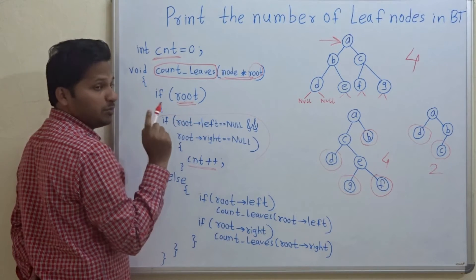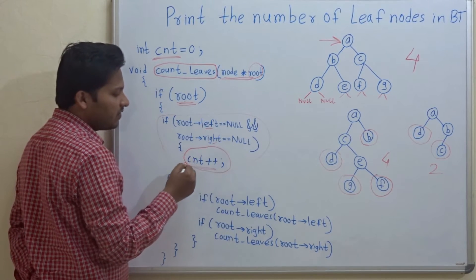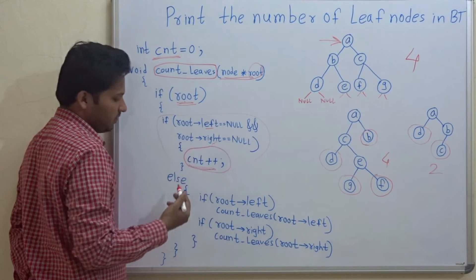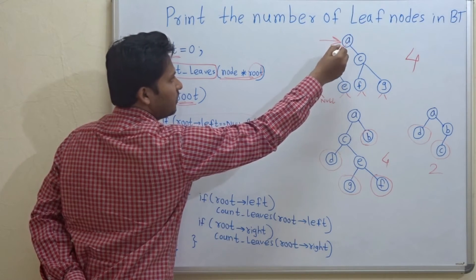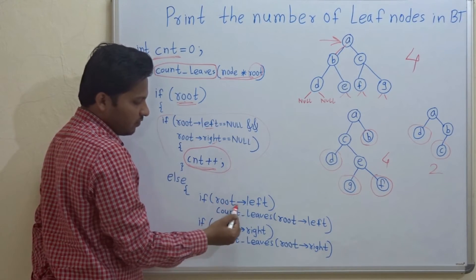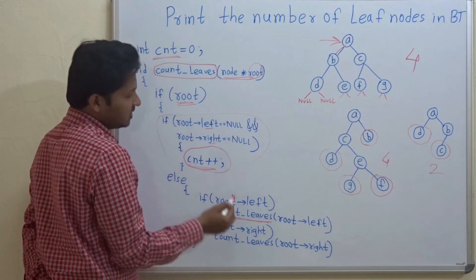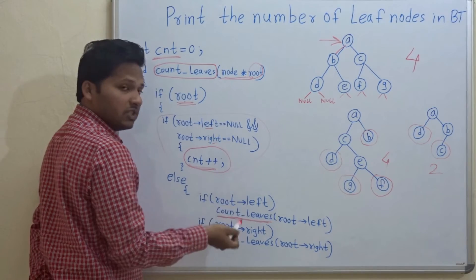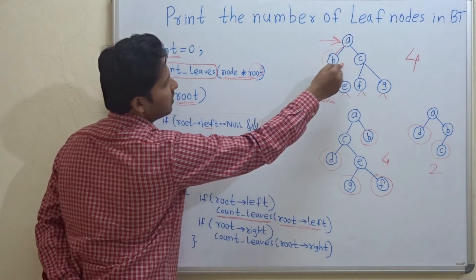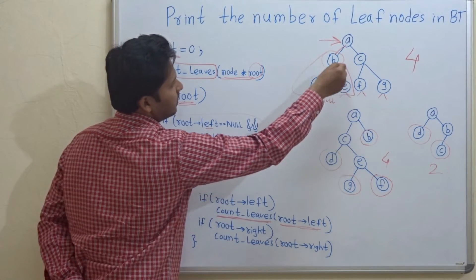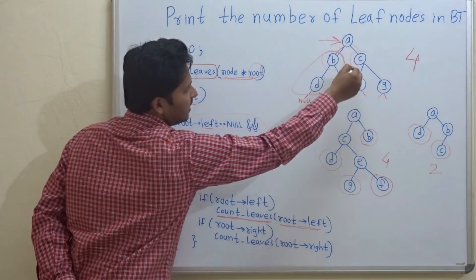Root is a variable and we are checking if it is null or not. If it is not null, it means it is a node and we are checking whether the left and right child of that node are null. If they are null, it means that is a leaf node and we increase the counter. Else, we check whether the left side of the node is present. If root points left, then we call the recursive function count_leaves and pass root's left child — the left subtree — for counting leaf nodes. And if the right side is present, we pass the right subtree also.